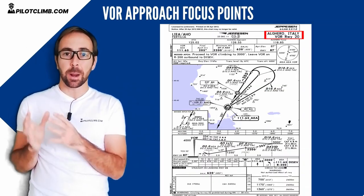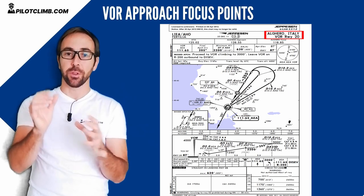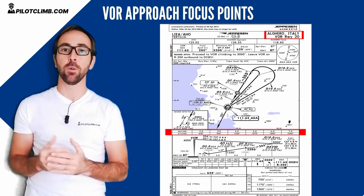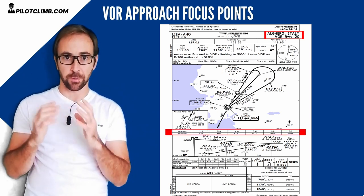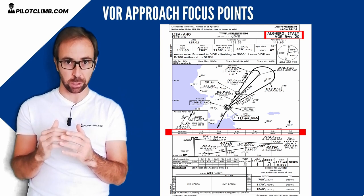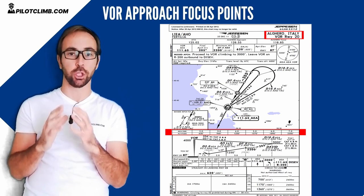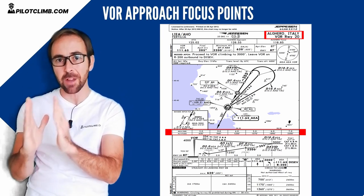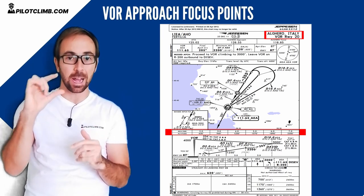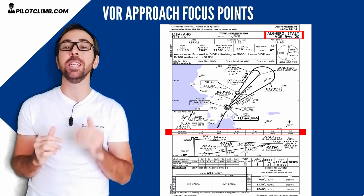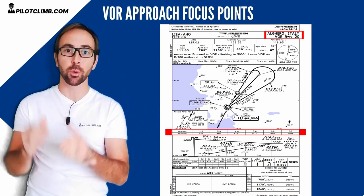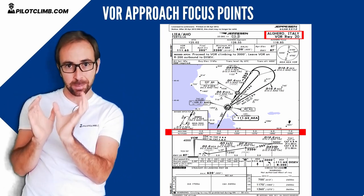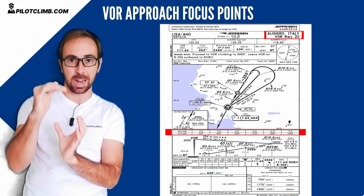What you have on the VOR approach is distances and altitudes. If you go into your VOR approach chart, you will see that for every mile there is normally an altitude associated with it. And it is your job to cross that distance — that nautical mile — at that altitude.